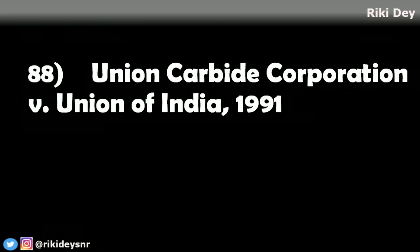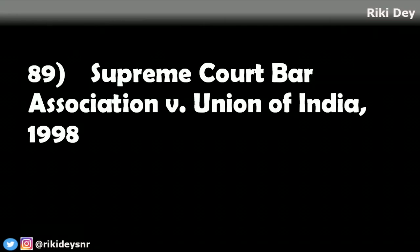Union Carbide Corporation versus Union of India: the court held that prohibitions or limitations or provisions contained in ordinary law cannot ipso facto act as prohibitions or limitations under constitutional powers under Article 142. Supreme Court Bar Association versus Union of India: the court observed that powers under Article 142 cannot in any way be controlled by any statutory provisions.